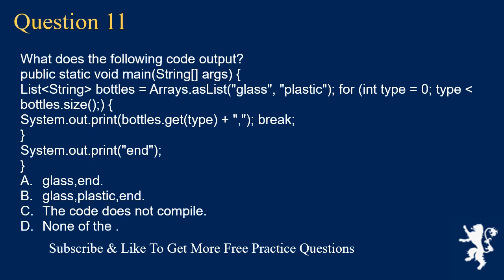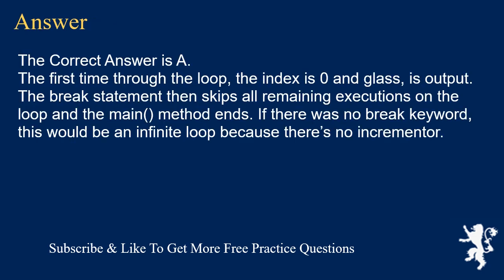Question 11. What is the following code output? A list of bottles (glass, plastic) is iterated with a for loop; after printing the first element, a break statement is encountered. A. glass end. B. glass plastic end. C. The code does not compile. D. None of the above. The correct answer is A. The first time through the loop, the index is zero and glass is output. The break statement then skips all remaining executions of the loop and the main method ends. If there was no break keyword, this would be an infinite loop because there is no incrementer.